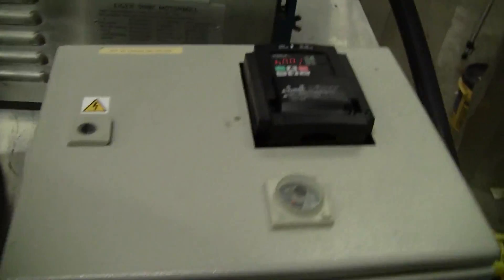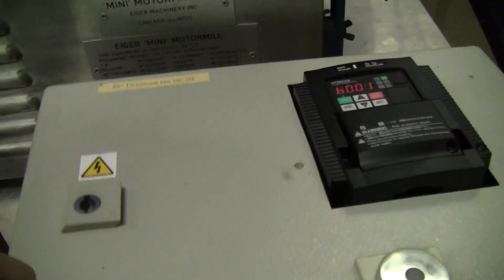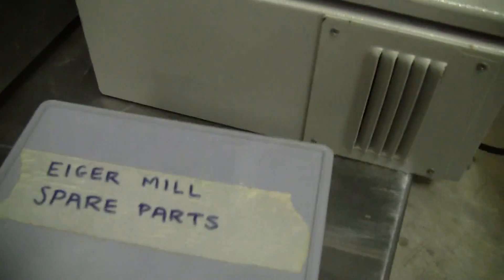There's the control panel. We have the directions inside on how to run the control panel. We have some spare parts for the Iger Mill.